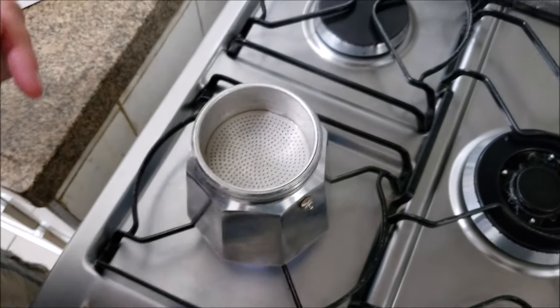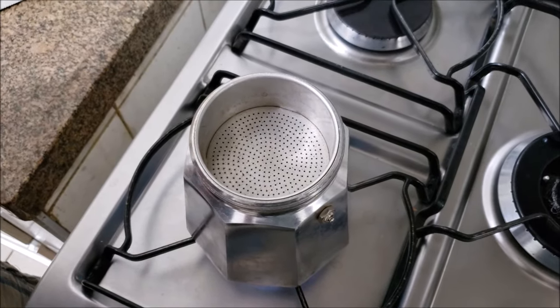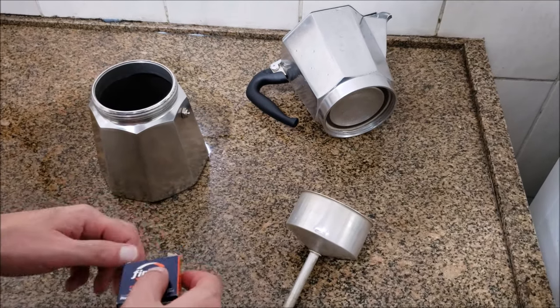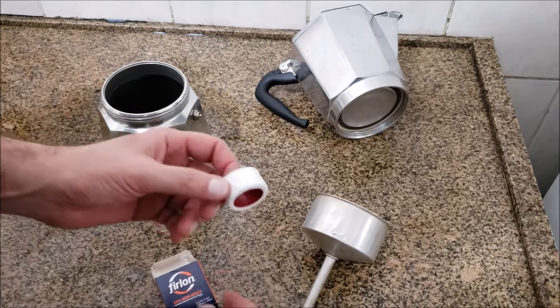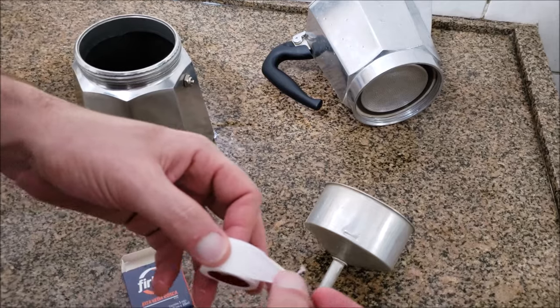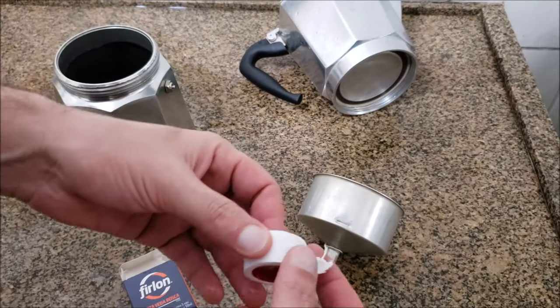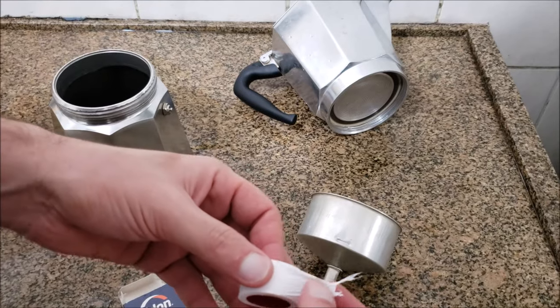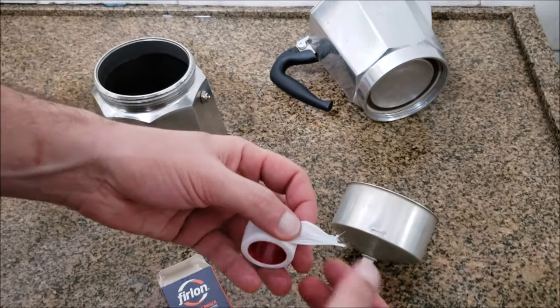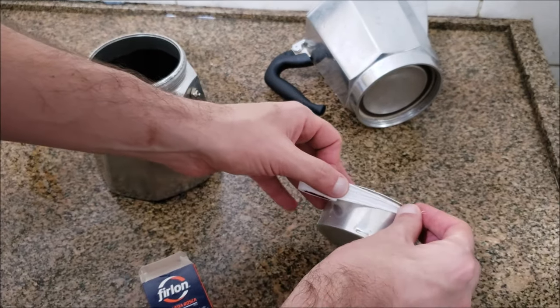So I'm gonna give you a simple tip of how to solve it. All you're gonna need is this PTFE tape. This is used for piping, for sealing piping. It's very cheap, you can find it easily, and all you're gonna need is to wrap the funnel with this tape like this.